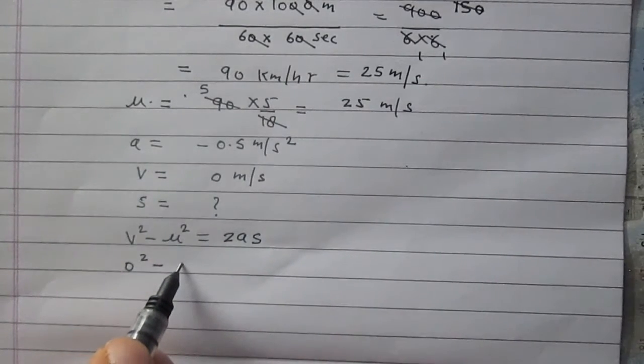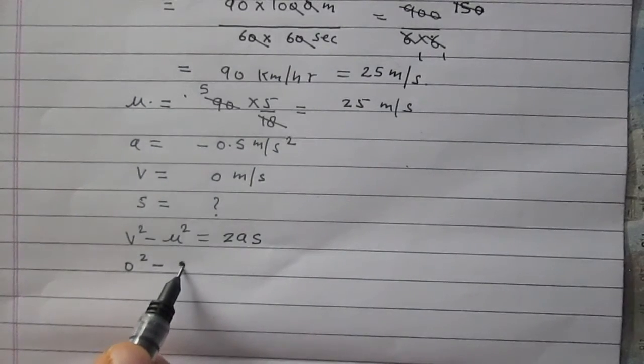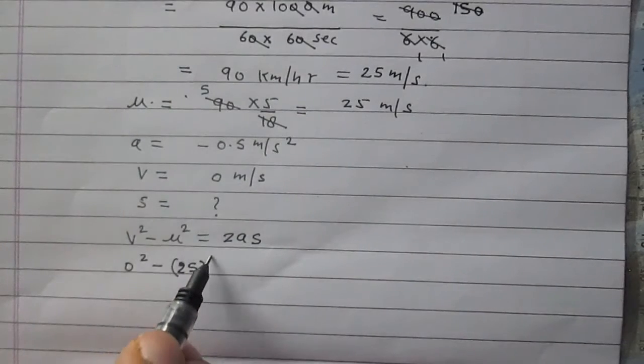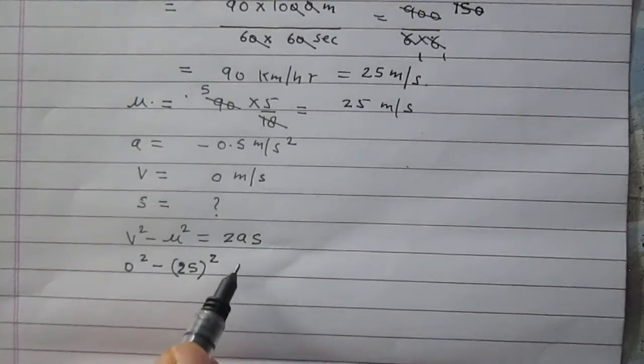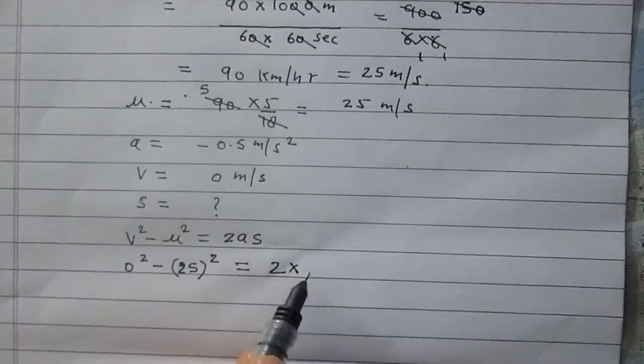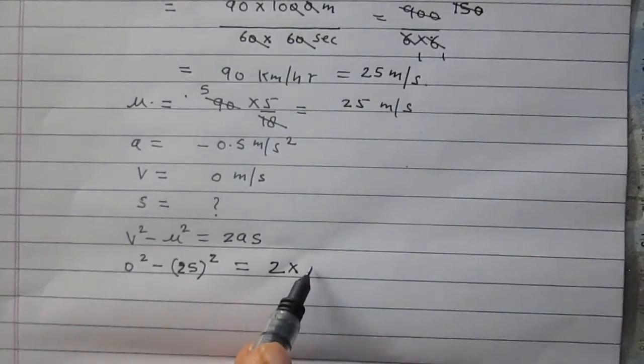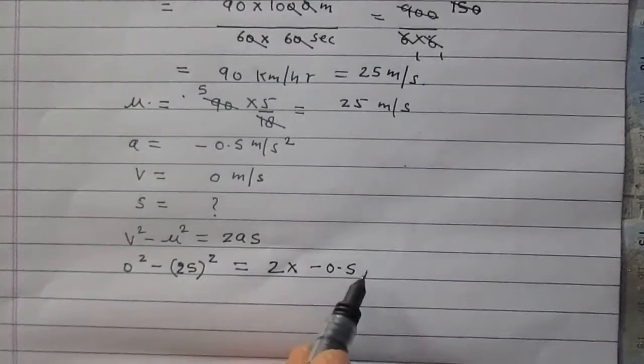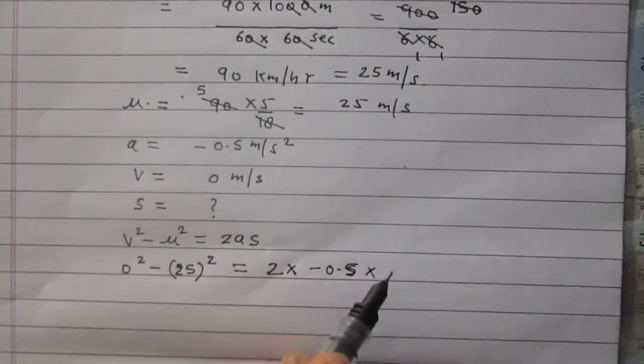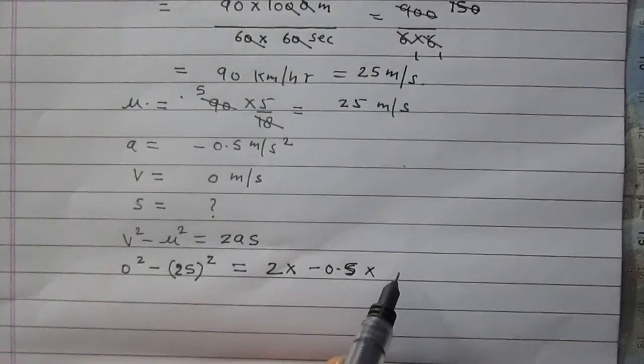v is 0 because body is brought to rest, so final velocity is 0. Initial velocity is 90 kilometer per hour, which we have converted to 25 meter per second. So it is 25 meter per second and twice of acceleration and displacement. Acceleration is -0.5 and displacement or distance is s.